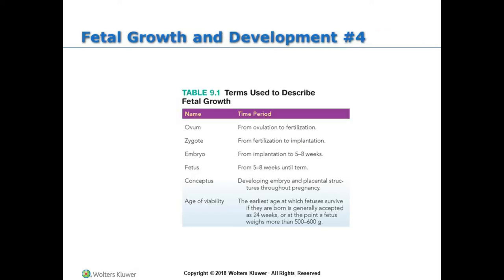Terms used to describe fetal growth include: the ovum, which spans from ovulation to fertilization; zygote, which refers to fertilization to implantation; embryo, which refers to implantation to 5–8 weeks; and fetus, which refers to 5–8 weeks until the pregnancy reaches term.